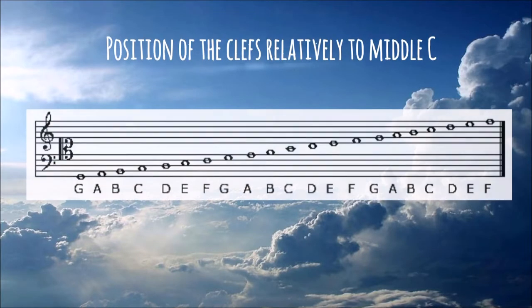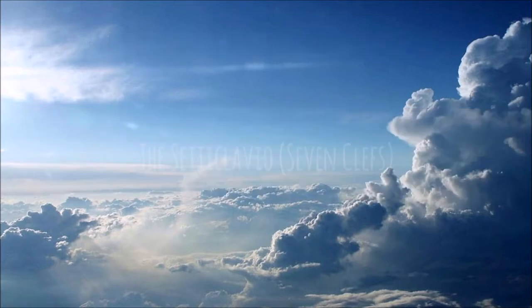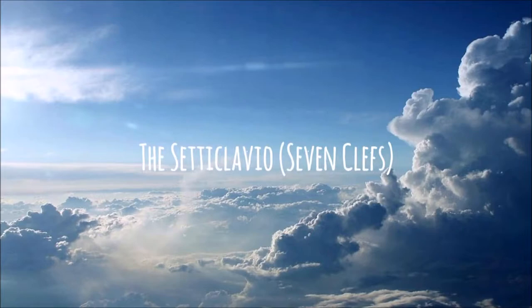If we use two staves, we can see at which height the three clefs are positioned relative to middle C. Those three clefs then create the set di clavio, or seven clefs.